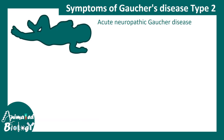Now, Gaucher disease type 2 has all the neurological symptoms. Unlike type 1, where neurological symptoms are not prevalent, type 2 — also known as acute neuropathic Gaucher disease — presents with many neurological symptoms.